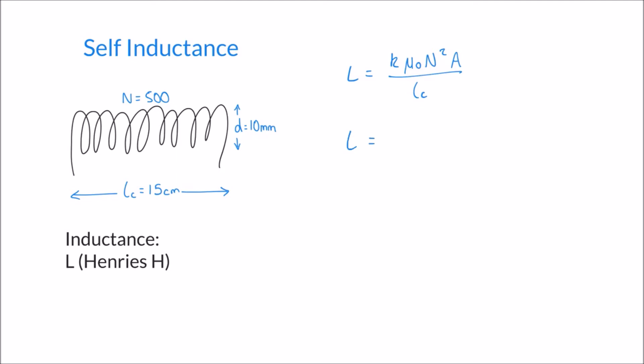We said we'd talk more about k, the relative permeability, later in the video. For now I'm going to say that k equals 1. Our second term, mu-naught, is 1.257 times 10 to the minus 6.